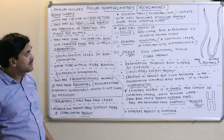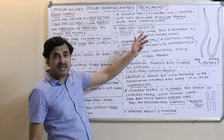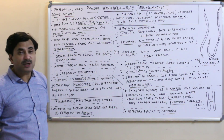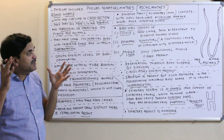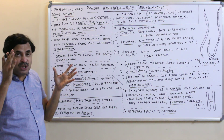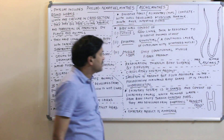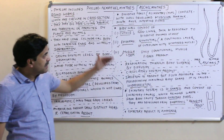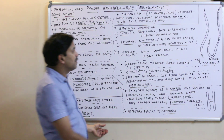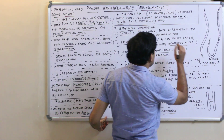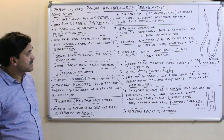Just below the cuticle is the epidermis, which is syncytial — a continuous layer of cytoplasm with many scattered nuclei, meaning a multi-nucleated condition. Just below the epidermis is the muscle layer, which consists of only longitudinal muscles.